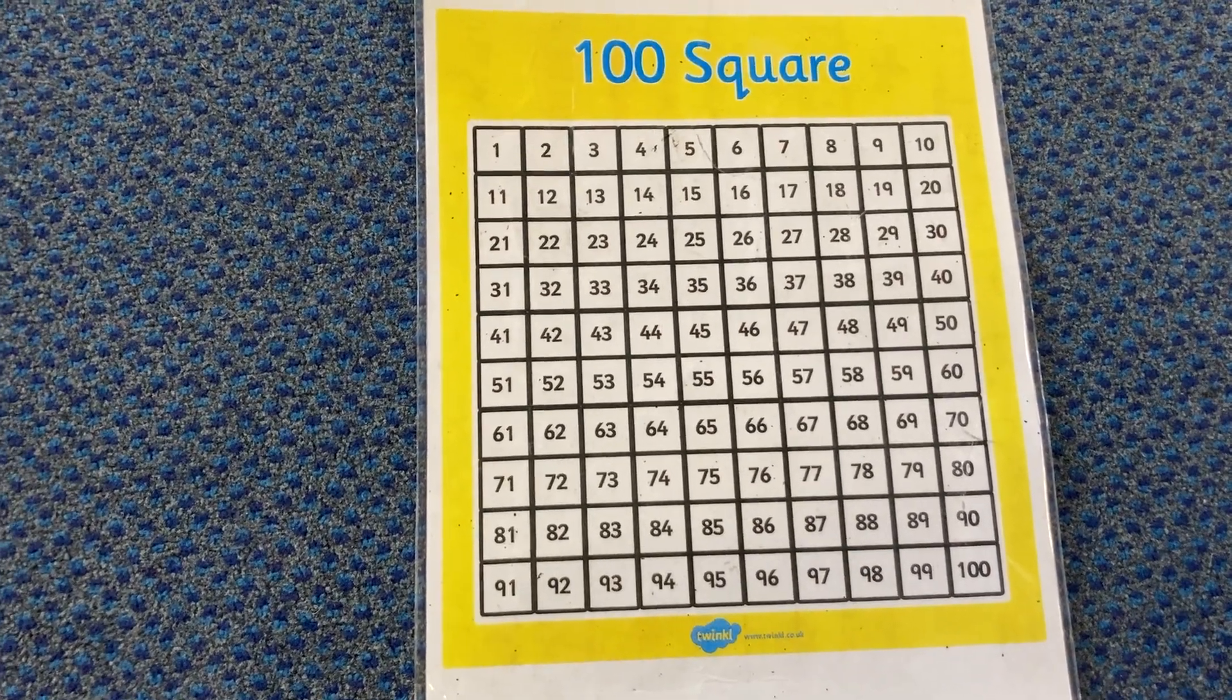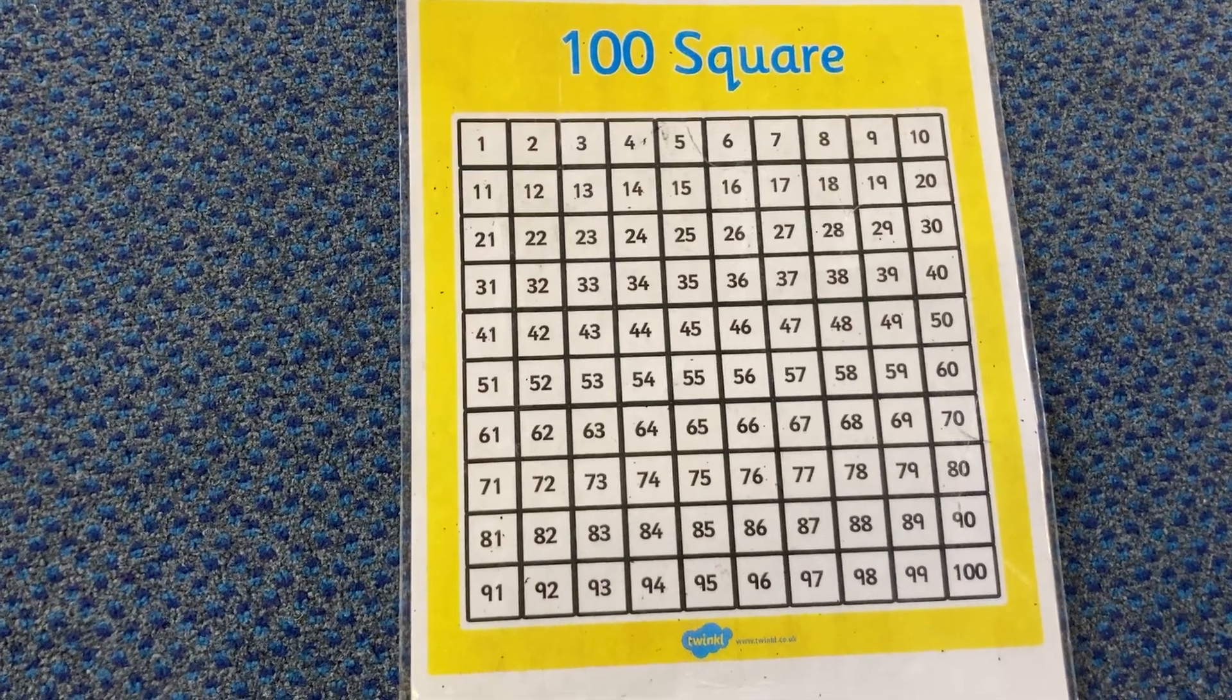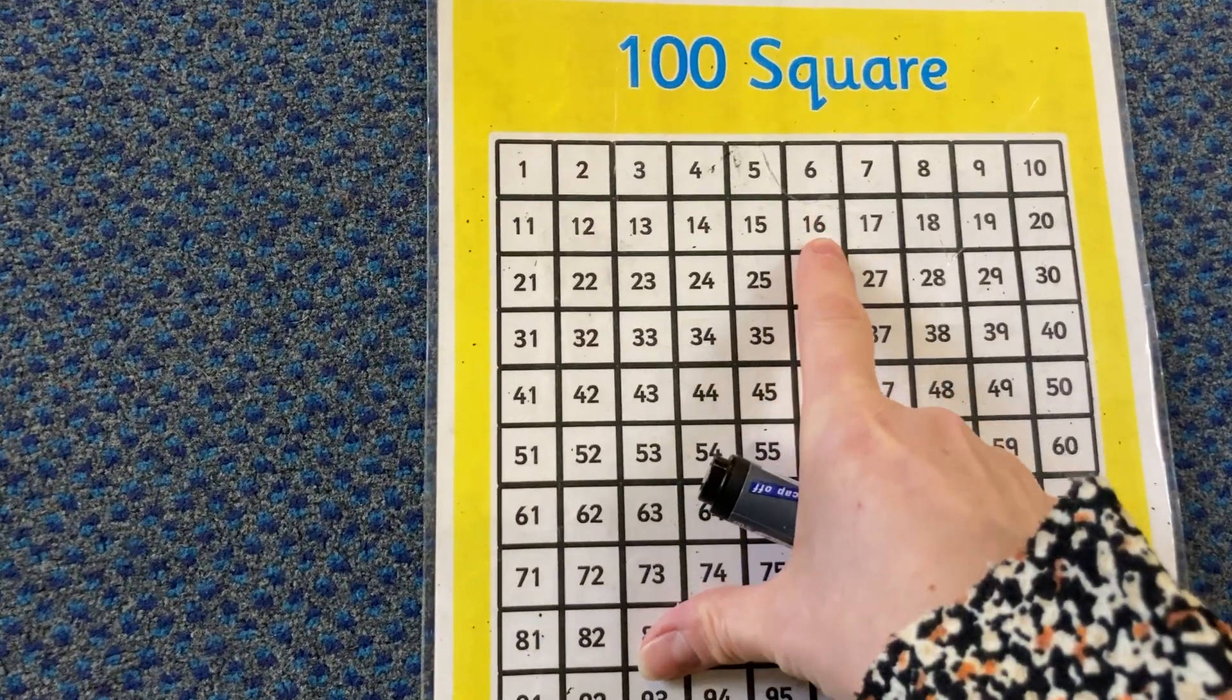So let's choose a number on the number square. So for example, if I chose the number 16.